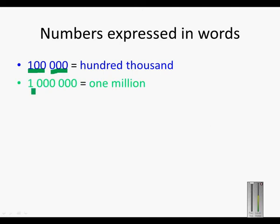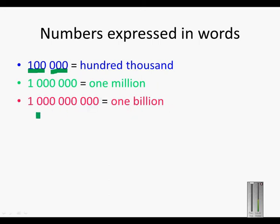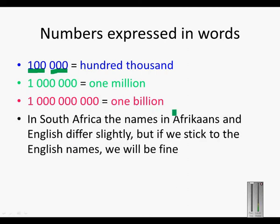One million: one and six zeros is one million. One billion has nine zeros. In South Africa, the names in Afrikaans and English differ slightly, but if we stick to the English names, we will be fine. So just to recap: hundred thousand has five zeros, one million has six zeros, and one billion has nine zeros.